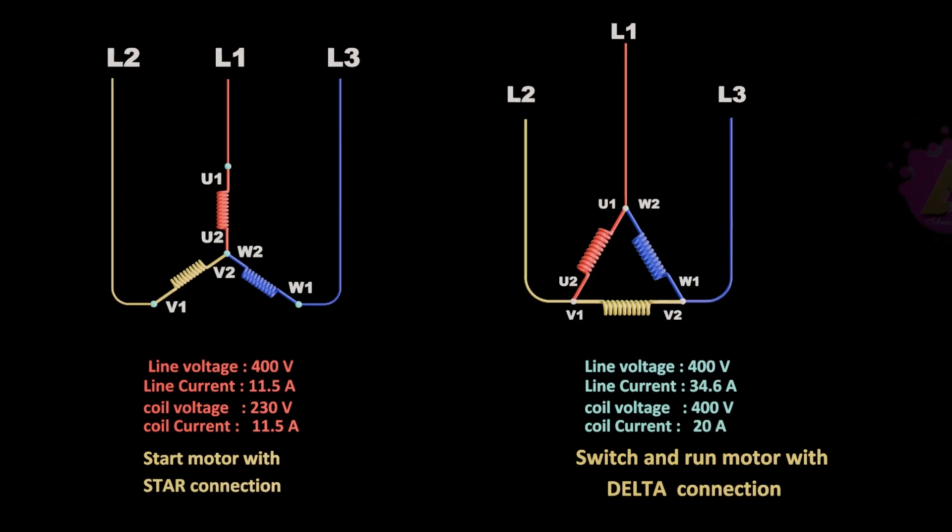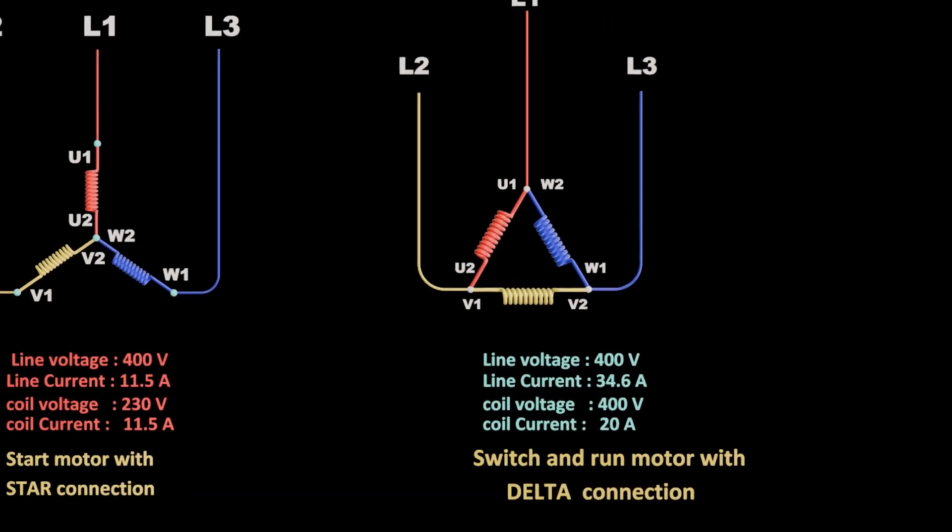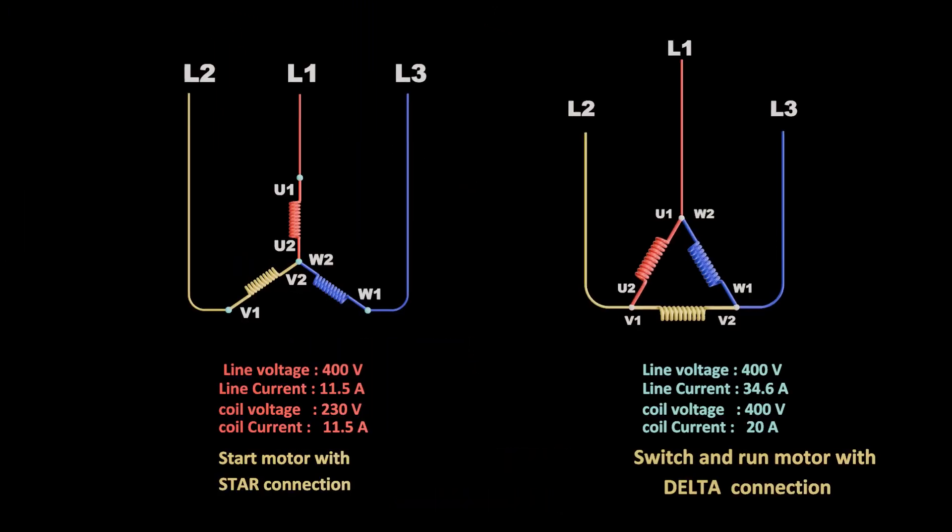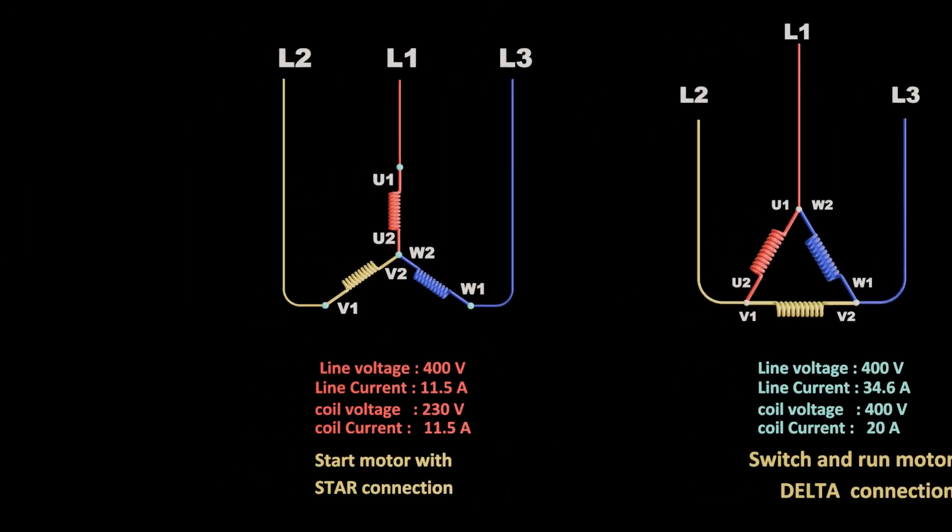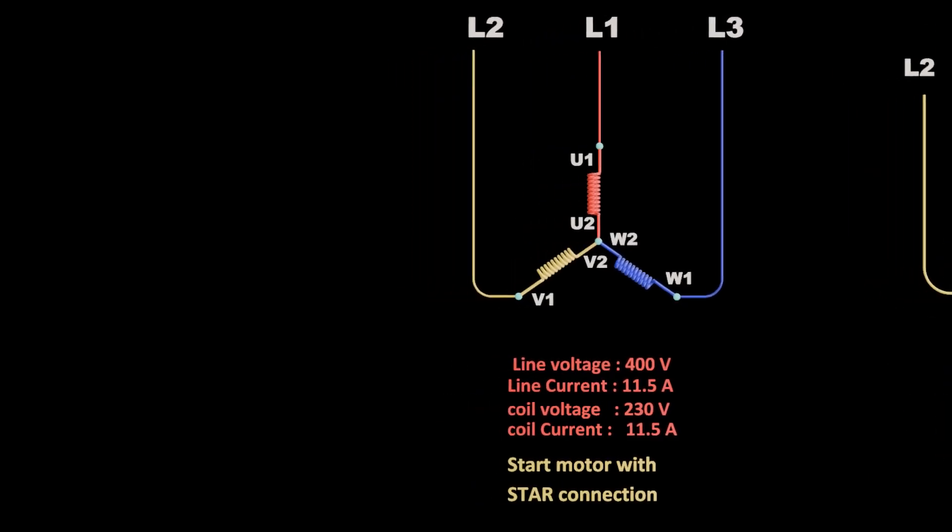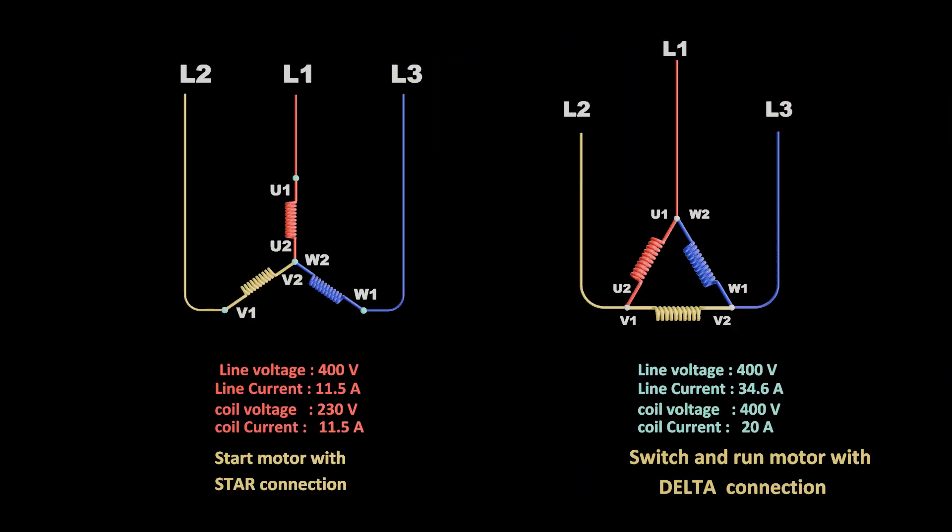So we can see the delta configuration coil is exposed to 400 volts between two phases, but the star configuration is only exposed to 230 volts between the phase and neutral point. So the star uses less voltage and less current compared to the delta version.